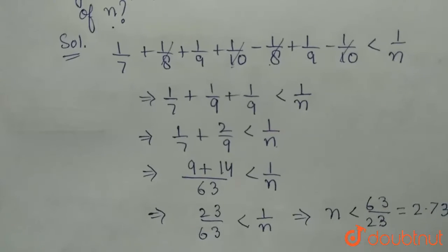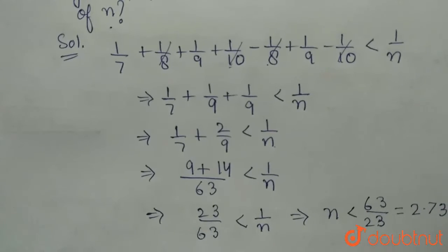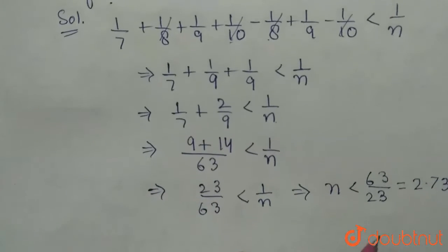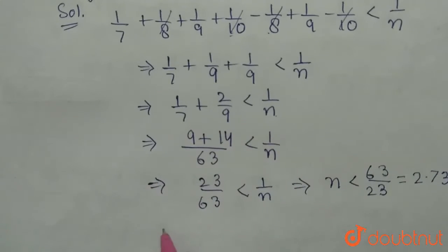And since we need to find the greatest possible integer for this n, the greatest possible value for n will be 2.